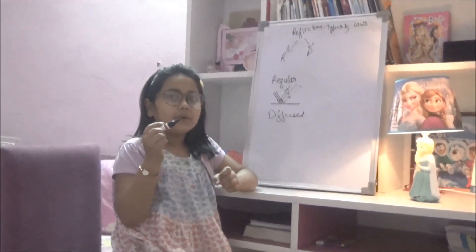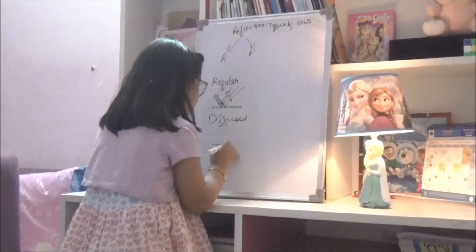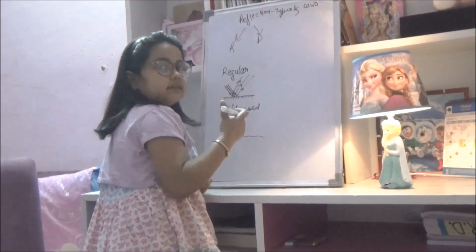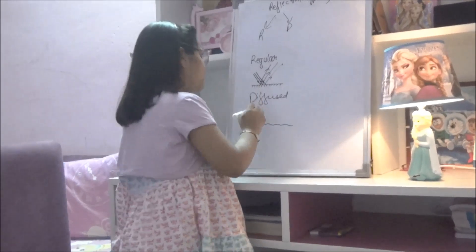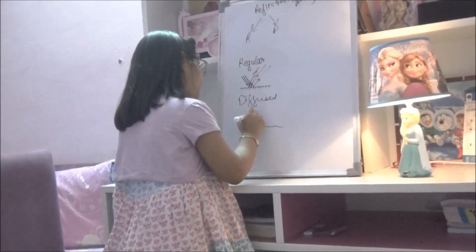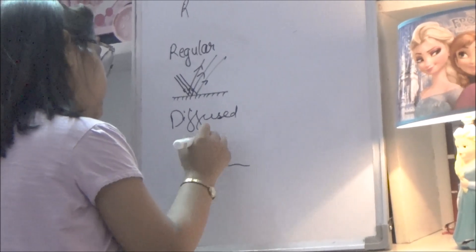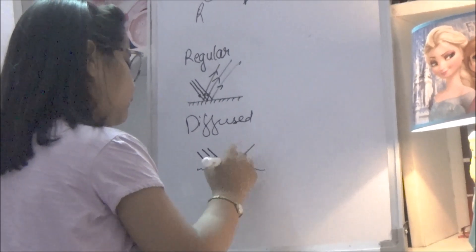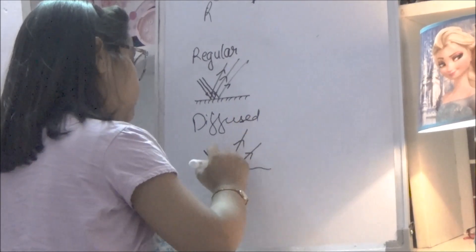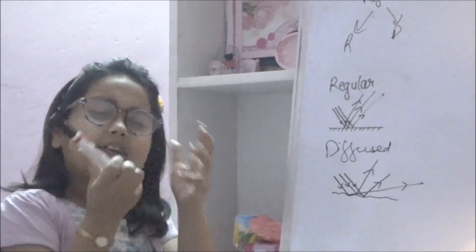On a rough surface, since it is actually rough and dull, a ray of light coming in gets reflected in different directions — someone goes this way, someone goes that way, someone goes another way. So it does not get reflected in the same direction; it gets scattered.